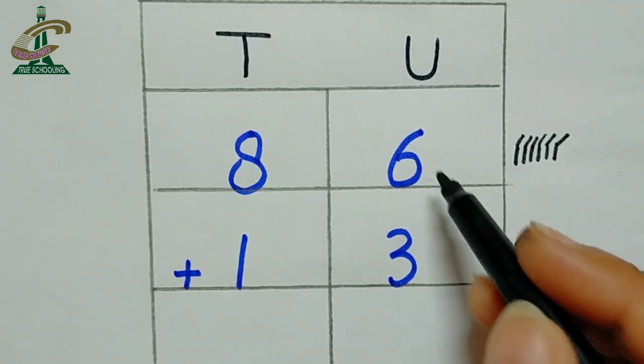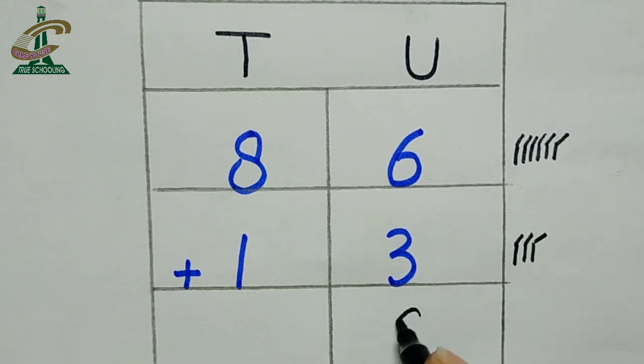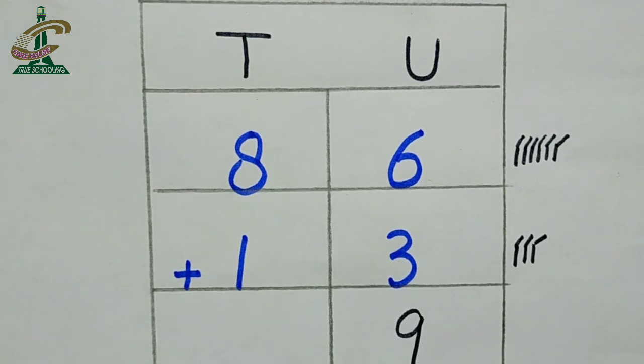Which number? After adding these two digits, we are receiving number 9. Which number is this? Tell me. This is 9. Is it clear?